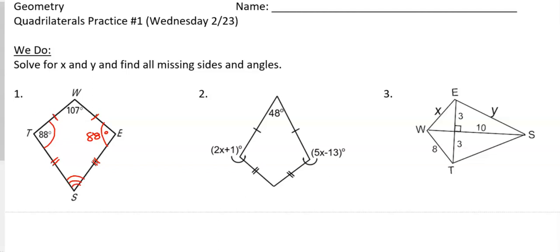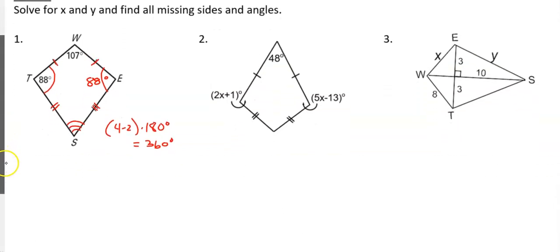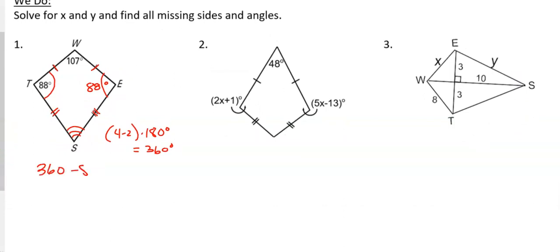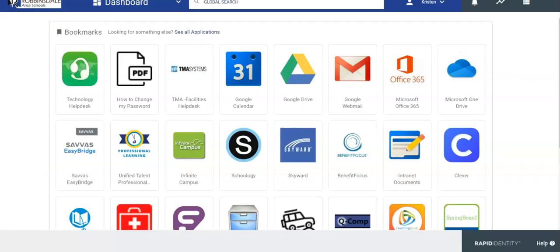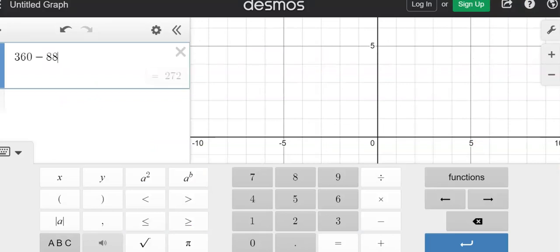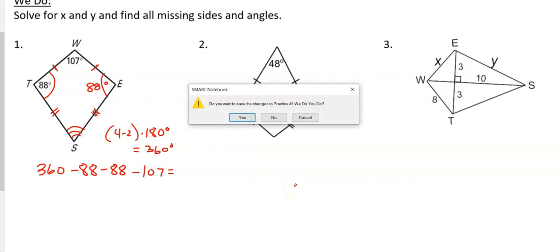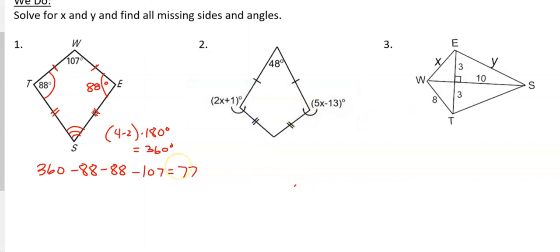Well, now we got to go back to kind of the last unit where we know that if a shape has four sides, it's going to have four minus two times 180 degrees for the interior angles. So basically that's going to be two times 180, which is 360 degrees. So all four angles should add up to 360 degrees. So what we need to do is take 360, subtract 88, subtract another 88, and subtract 107. So I'm going to grab a calculator and do that. 360 minus 88, minus 88, minus 107. And we're going to get 77 degrees.